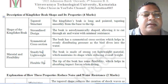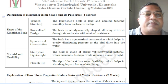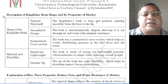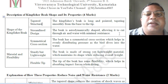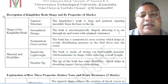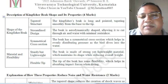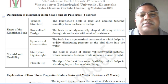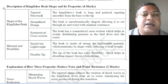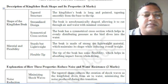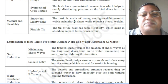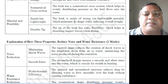Materials and flexibility: it is sturdy but lightweight and has a flexible tip. The kingfisher's beak is very long, pointed, and tapers smoothly from the base to the tip. The beak is aerodynamically shaped, allowing it to cut through air and water with minimum resistance — cutting through water means it is hydrodynamic. The symmetrical cross section helps in evenly distributing pressure as the bird dives into the water.